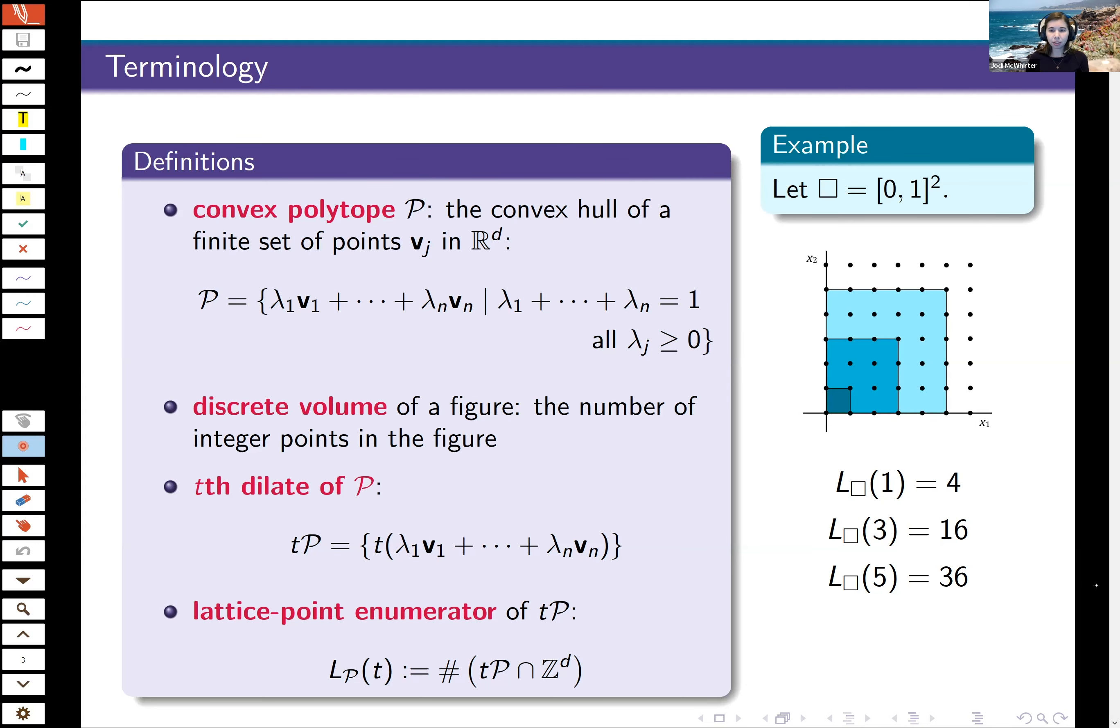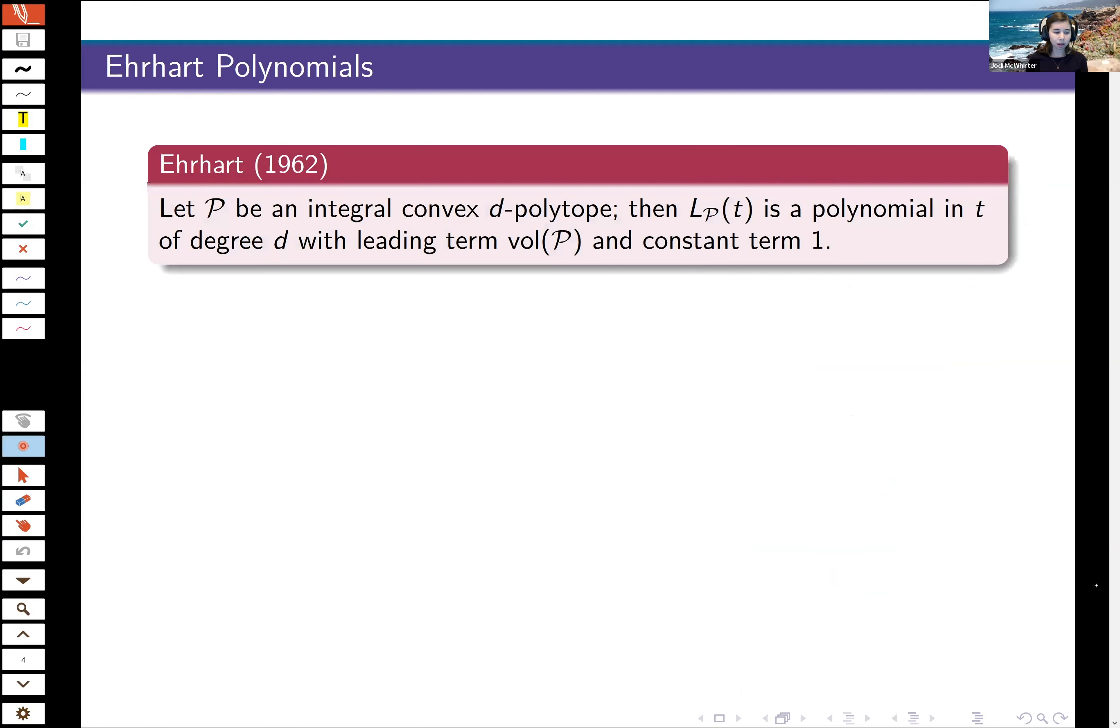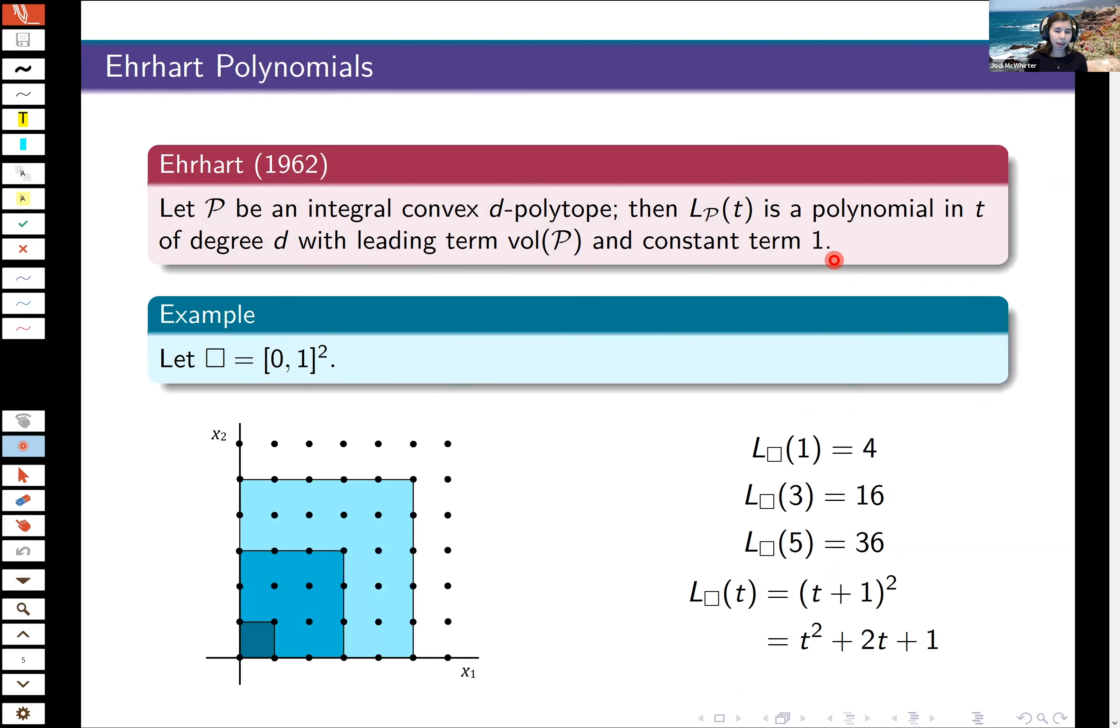So is there a similar pattern for other nice polytopes? And Ehrhart in 1962 said yes, there is. In fact, if you have an integral convex d-dimensional polytope, then this lattice point enumerator is a polynomial in t. And it has a degree d. It has leading term, the volume of P, and it has constant term one. So if I look back at this square again, and we multiply out t plus one squared, we're going to get a polynomial in t of degree two with leading coefficient one, which is the volume of our nice little unit cube there, and constant term one.